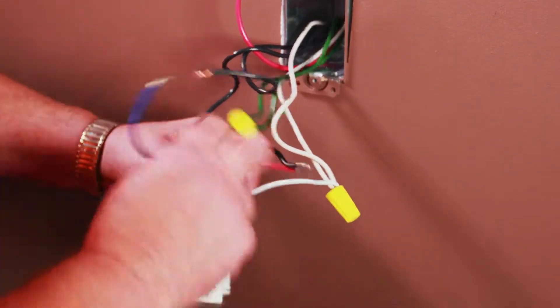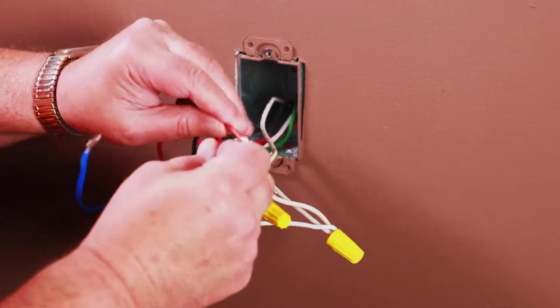Now, connect the red wire on the timer to the traveler that you did not place the jumper on.